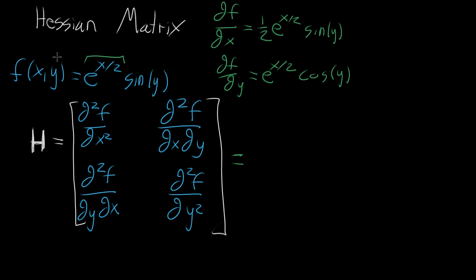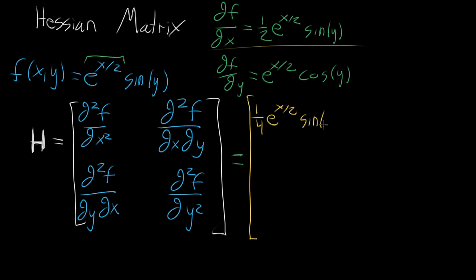These first partial derivatives won't be included in the Hessian itself, but we keep a record of them. Now filling in the matrix: the upper left component is the second partial derivative with respect to x, then x again. We bring down another half, giving one fourth e to the x halves times sine of y. The mixed partial derivative, doing it with respect to x then y: the one half e to the x halves looks like a constant, and the derivative of sine of y gives cosine of y, so we get one half e to the x halves times cosine of y.